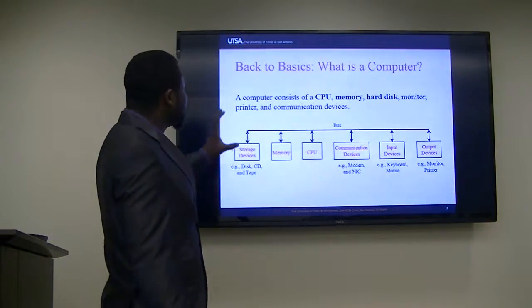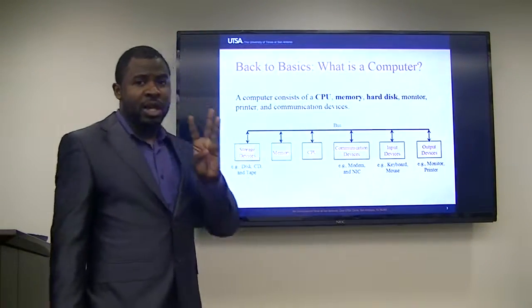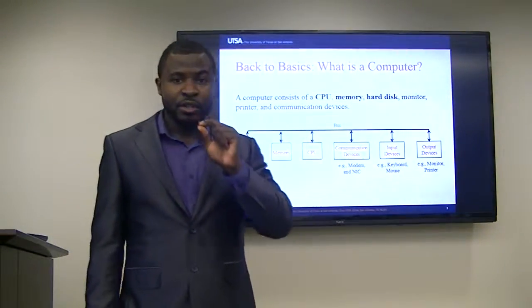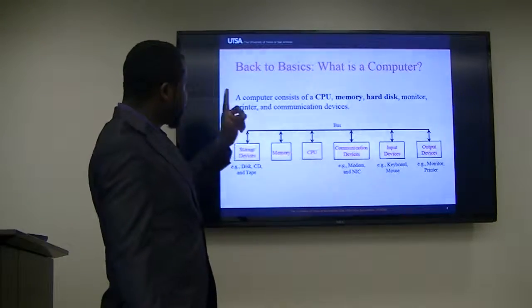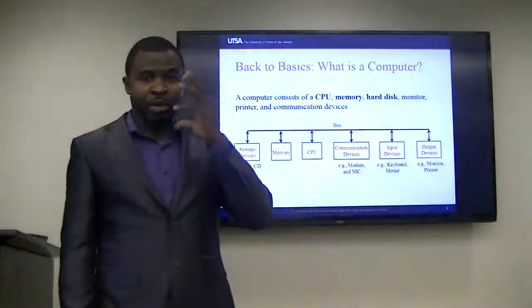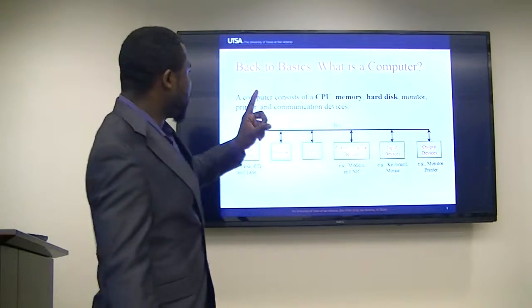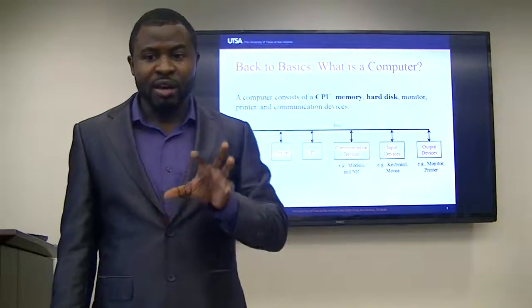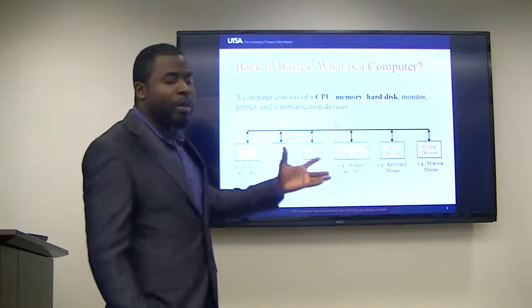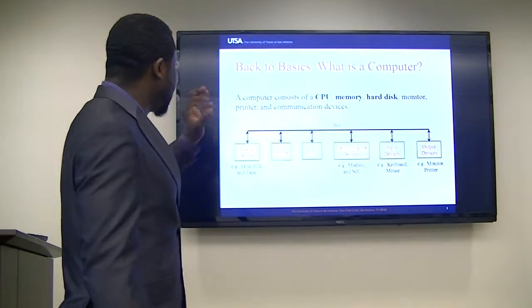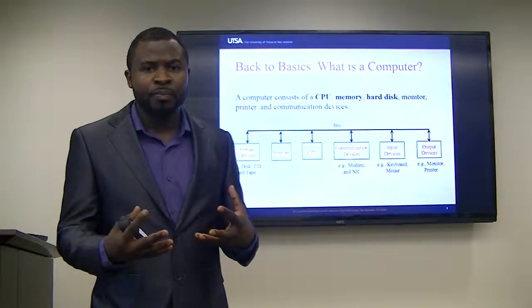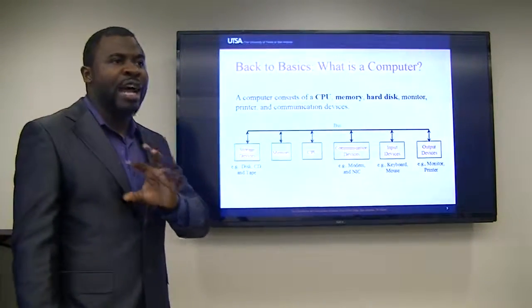Going back to the lecture — what constitutes a computer? There are three main things to remember. If you remember nothing else from this lecture, remember these three: a CPU, memory, and a hard disk. The central processing unit is like the brain of the computer where all computation takes place. Memory is a volatile, temporal storage. And the hard disk is permanent storage. There are also peripheral devices like monitors, printers, and USB drives, plus a bus connecting all components.